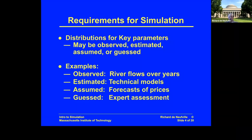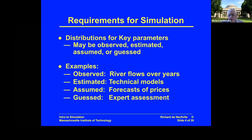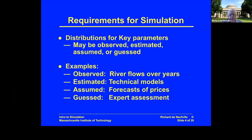So what do you need to do a simulation? You need distributions for the key parameters, which in general may be observed, estimated, assumed, or guessed. For example, observed: river flow. If you're trying to build a hydropower dam for the Nile, as they have done in Ethiopia, you'd want to know about the uncertainties of how much water is going to come down, how fast you can fill the dam. You can have observations of that for the past 50 to 100 years. River flow is an observable distribution and may have peculiarities — it doesn't have to follow a normal or Gumbel or other curve. It is what it is.